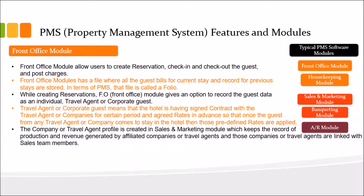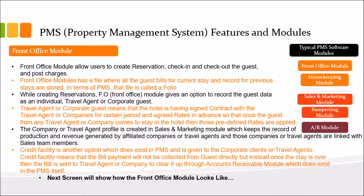The travel agent or company profile is created in the sales and marketing module, which keeps a record of the production and revenue generated by affiliated companies or travel agents. These companies or travel agents are then linked with sales team members. The sales and marketing module shows the production statistics of each company and each sales team member. Credit facility is another option in PMS given to corporate clients and traveling companies.